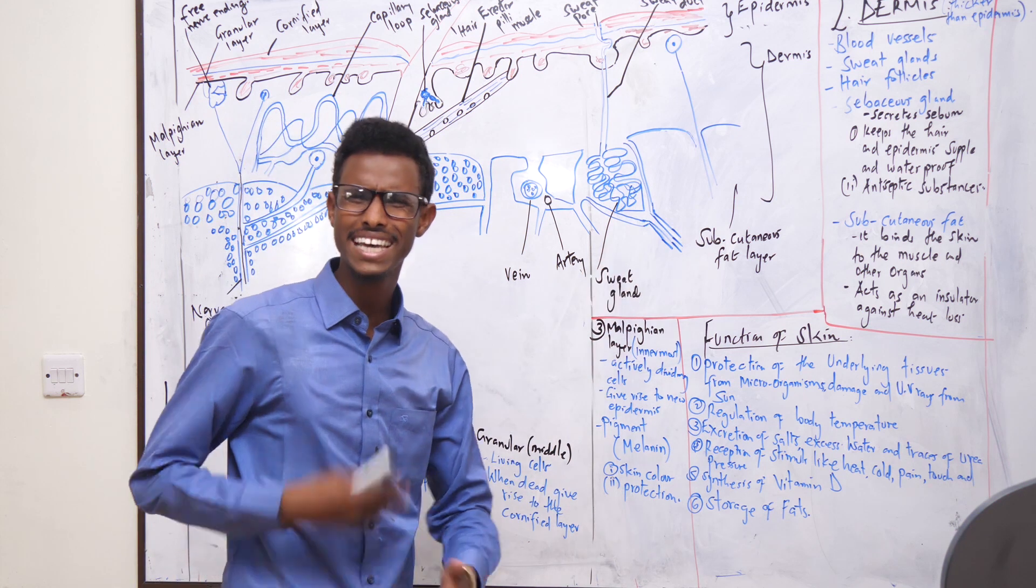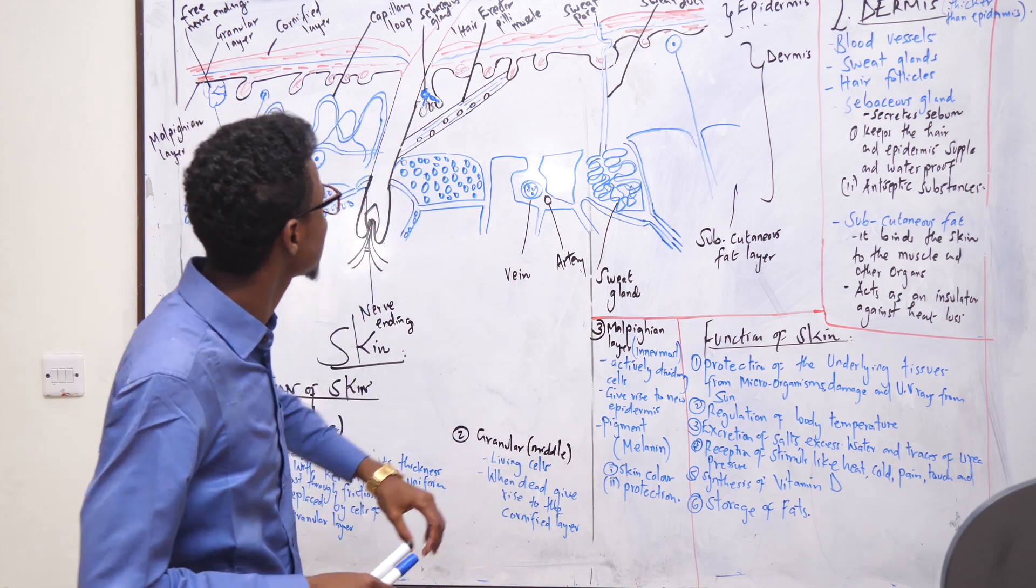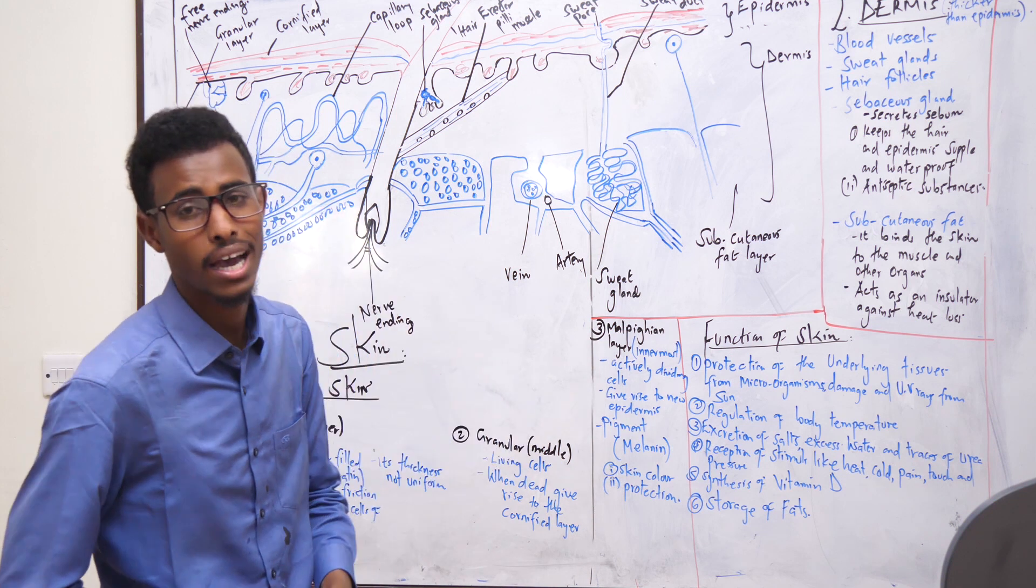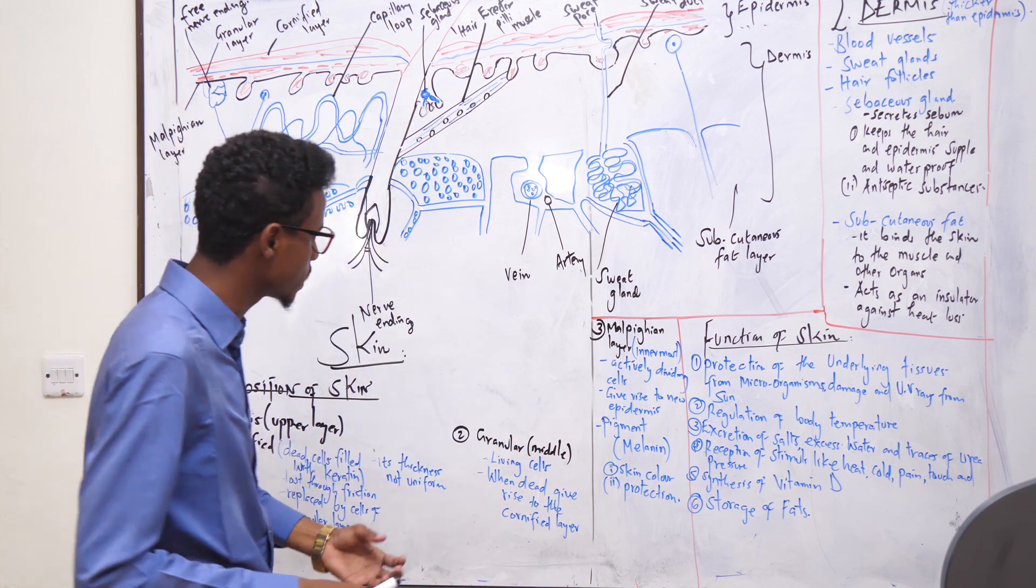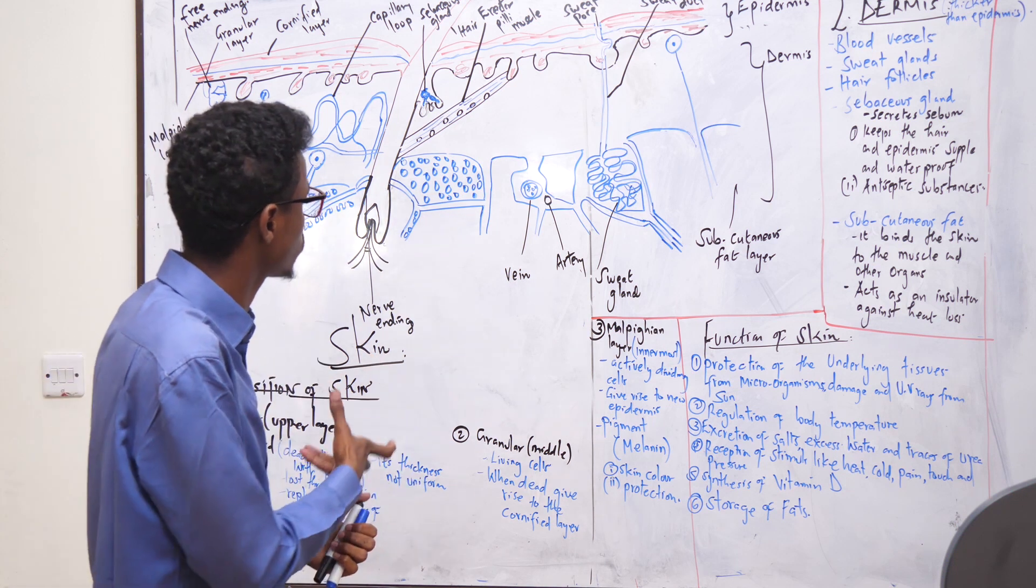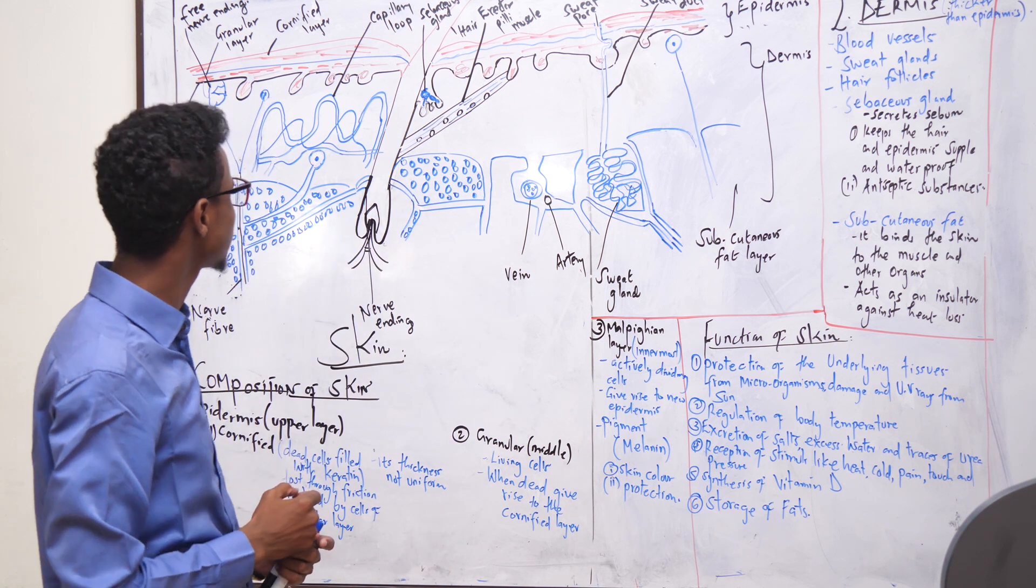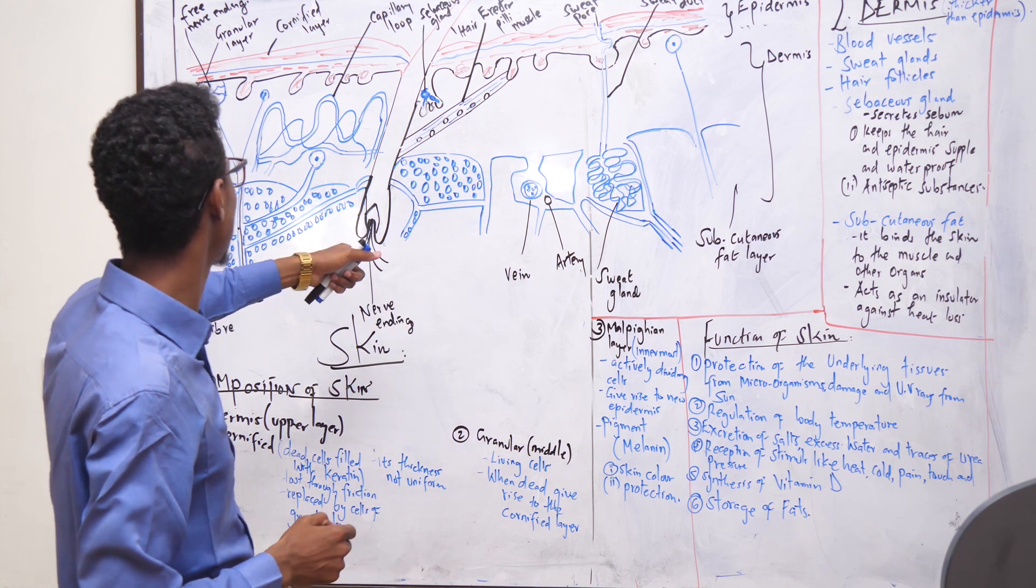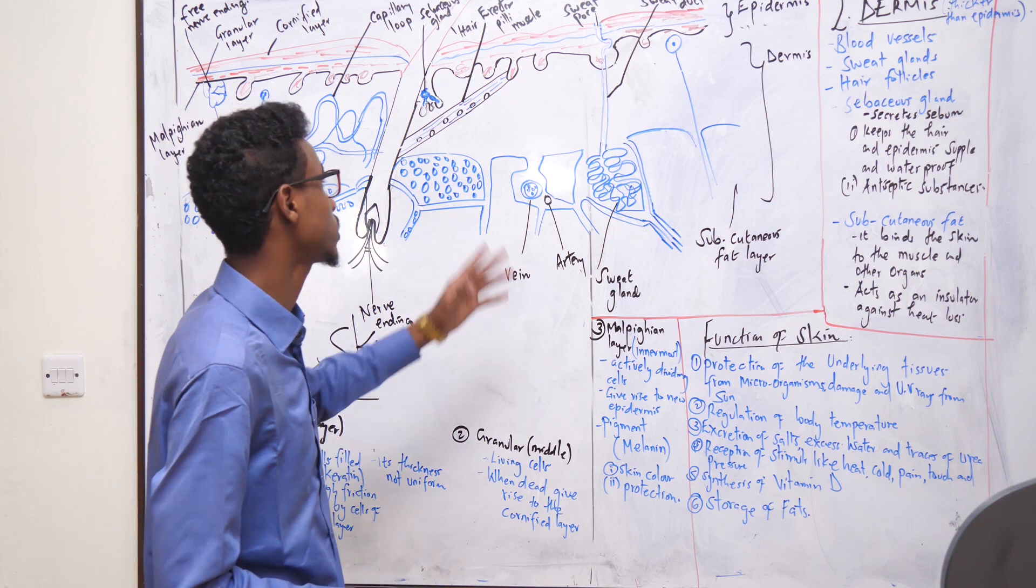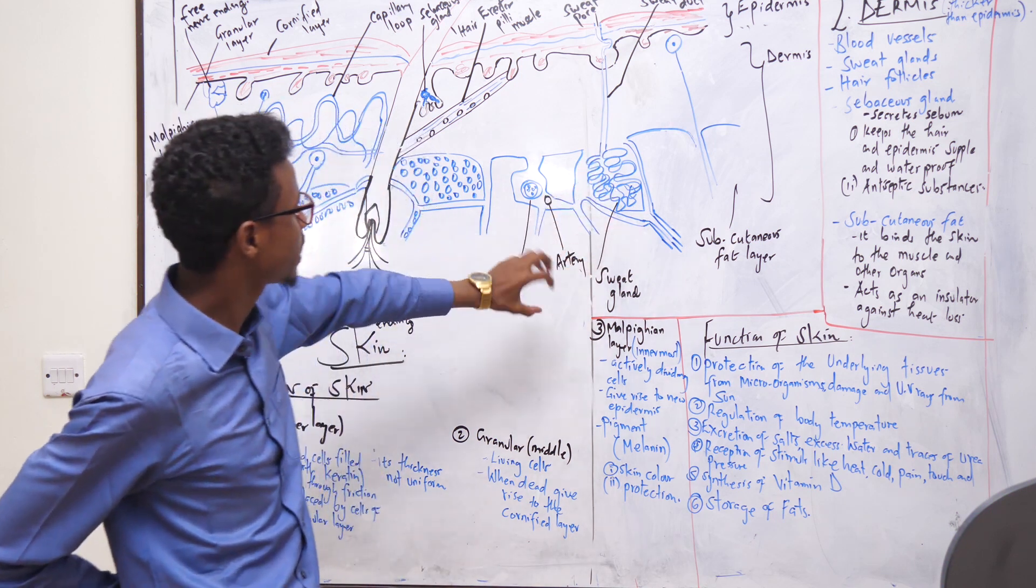Another function is the sweat gland. At high temperatures, the sweat gland gets activated and starts secreting sweat. The sweat will carry heat, excess water, urea, lactic acid, and salts. But the major role is removal of heat. When that sweat carries the latent heat of vaporization from the skin, it brings a cooling effect to the skin.